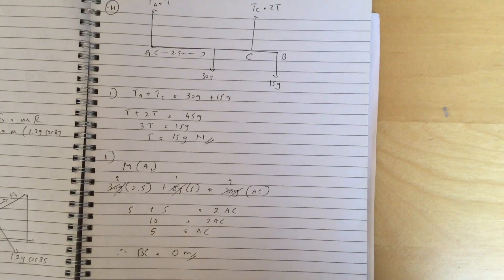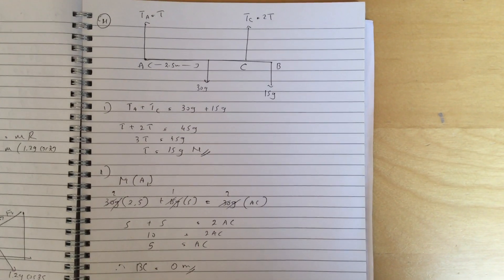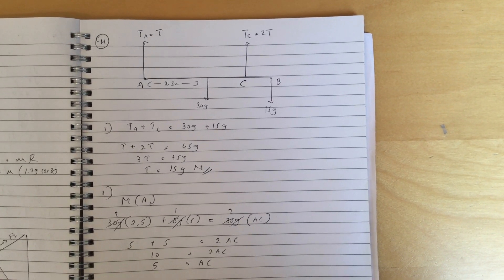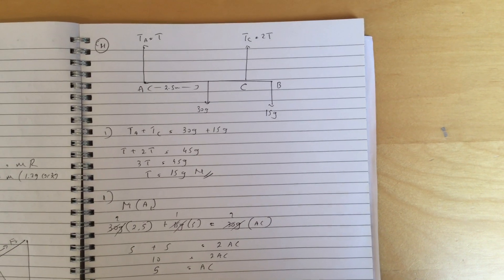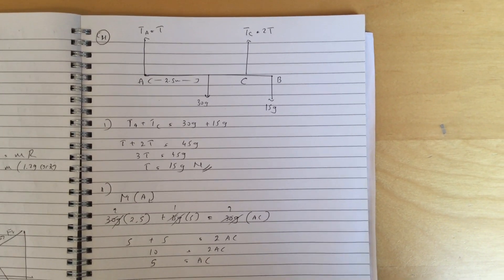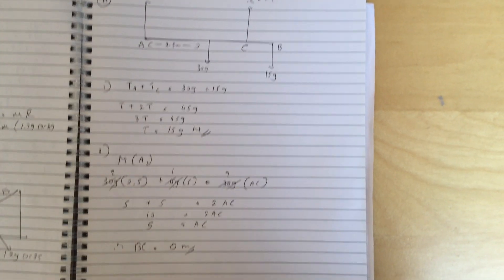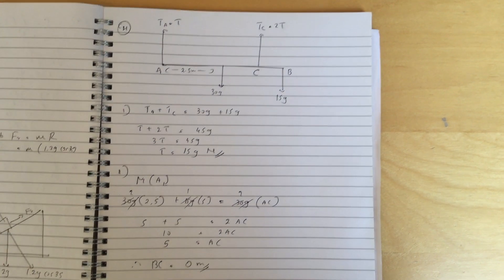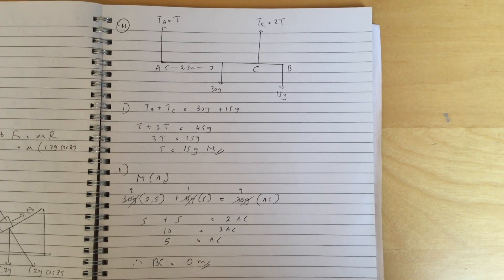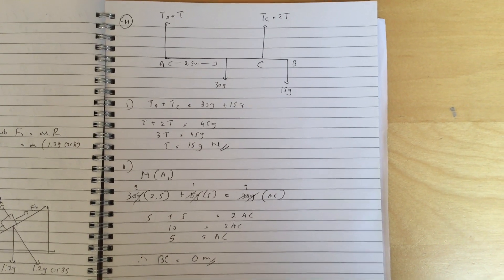Question 14, so, sorry, question 11, you get t equals to 15g. Okay, t is the tension at a. And to do part 2, so you take moments about a, and when you cancel it out, actually you get bc to be 0, so c is actually at b.